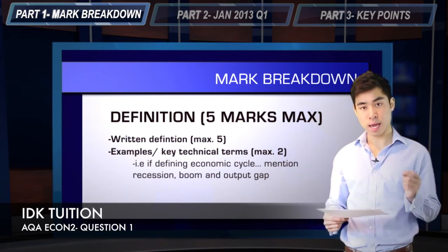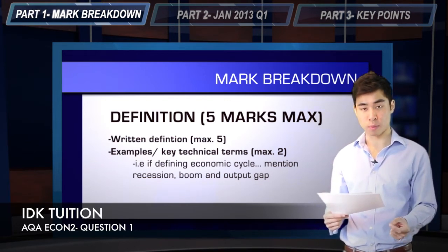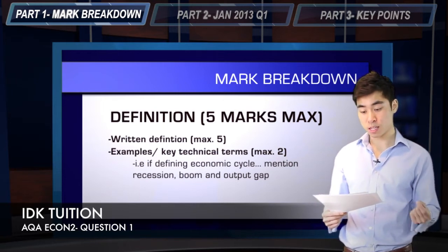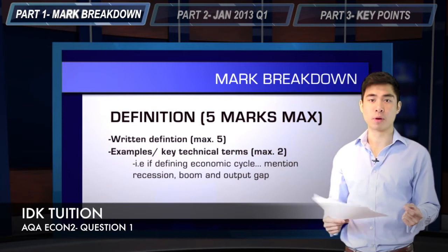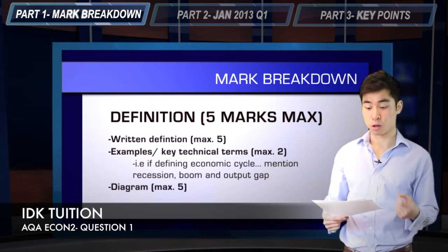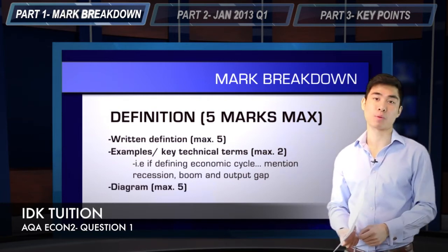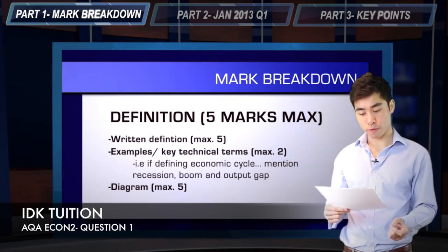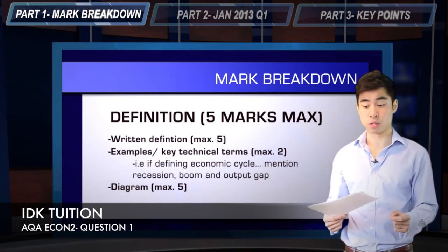Another example: say the definition in the question was the economic cycle. Key terminology here could include recession, could include the word boom, and also the word output gap. So there are two marks on offer, largely speaking, for including relevant examples.